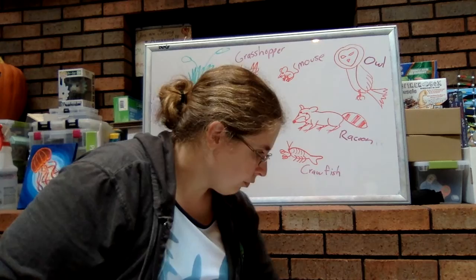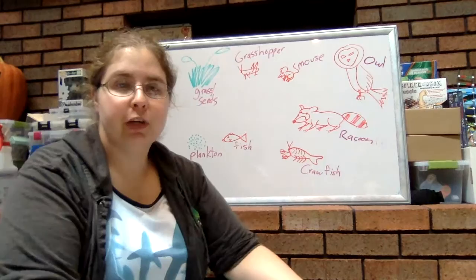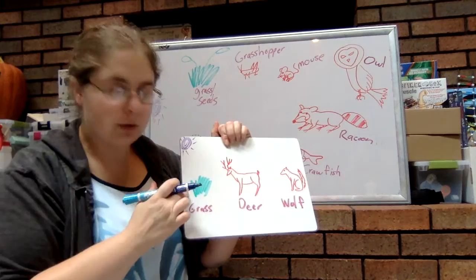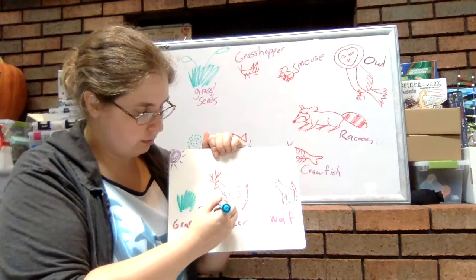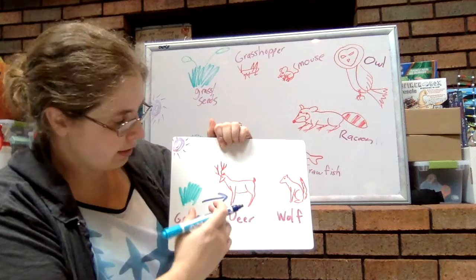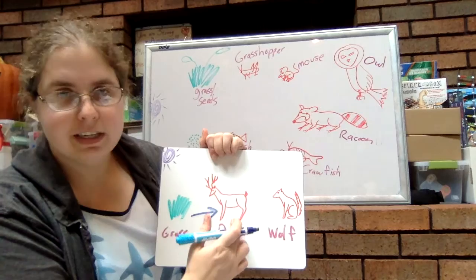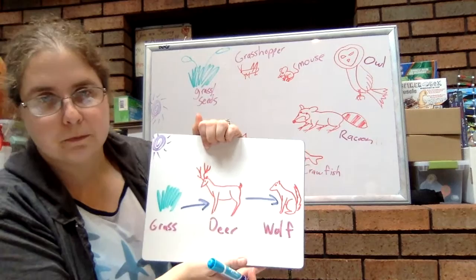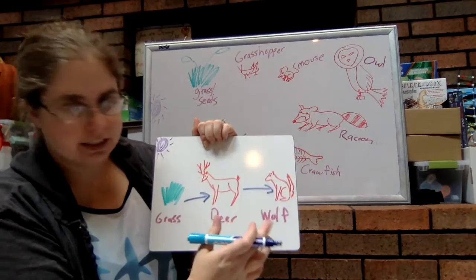Let's start with a food chain. A food chain is just a single pathway that the energy takes in an ecosystem. For instance, the sun allows the grass to do photosynthesis. The grass gets eaten by the deer, which means the glucose is being passed on to the deer — the deer is getting energy from the grass. You can think of the arrow as showing the flow of energy: it goes from the grass to the deer. And then the wolf eats the deer, so the wolf gets energy by eating the deer. That's just one pathway — that's what we mean by a food chain.